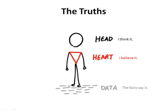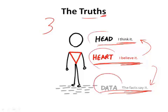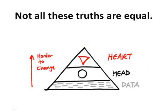The truth — it's not one truth, is it? It's actually the truths. There are really three truths that exist for all of us. There is the truth of data, the things that the facts say. Then there is the truth of our head, the things that we think. And then there is the truth of our heart, the things that we believe — often in conflict with the data and often in conflict with the things that we know. This puts us as presenters in an interesting position: which truth are we going to tell? We're always going to tell the truth, but will it be the truth of the head, the truth of the heart, or the truth of the data?